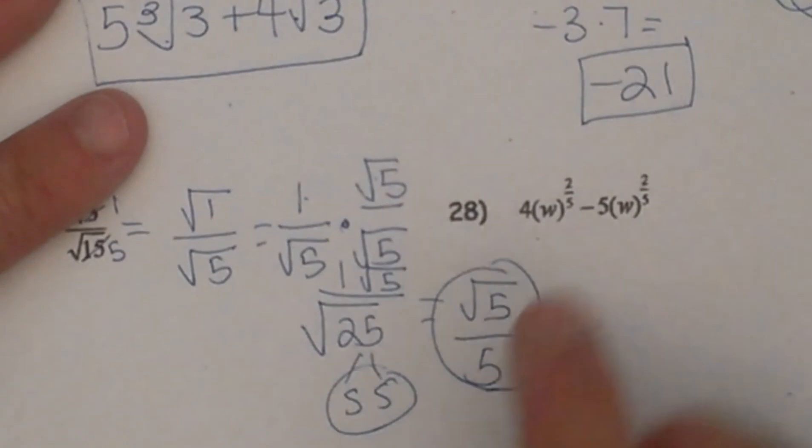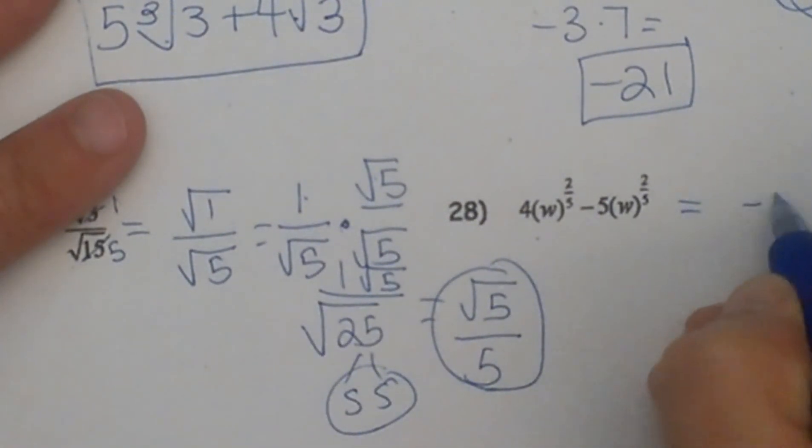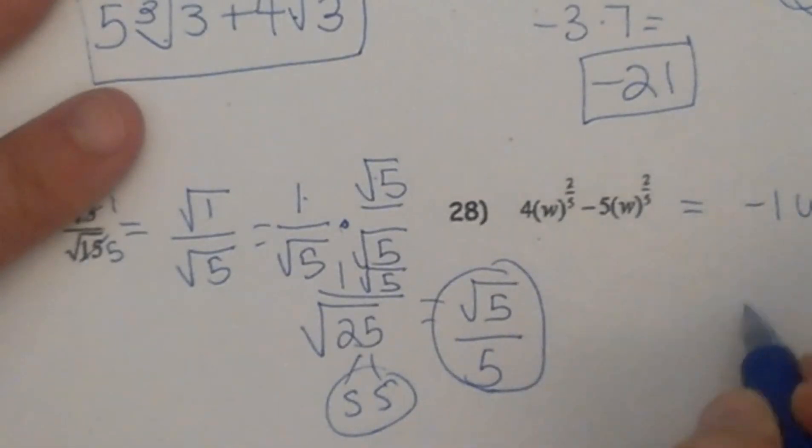And here is just a subtraction problem. Remember you just combine the coefficients. So 4 minus 5 is negative 1 w to the 2 fifths, or you can write it as just negative w to the 2 fifths.